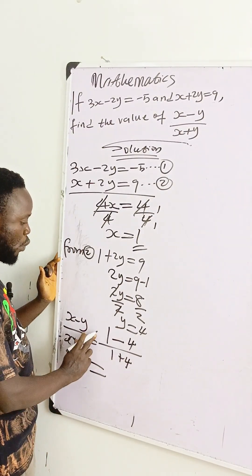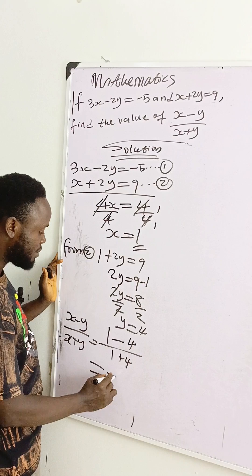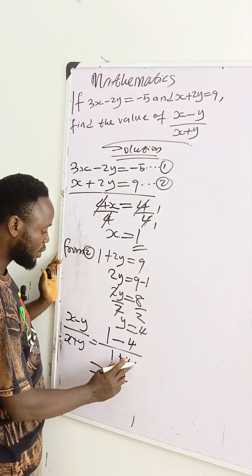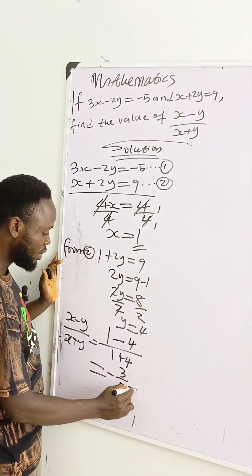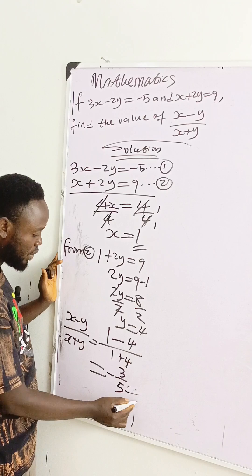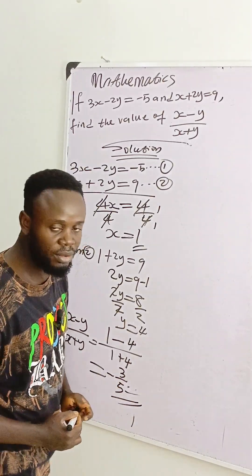This is equal to 1 minus 4 is minus 3. 1 plus 4 is 5. So the final answer to this question is minus 3 over 5. Thank you.